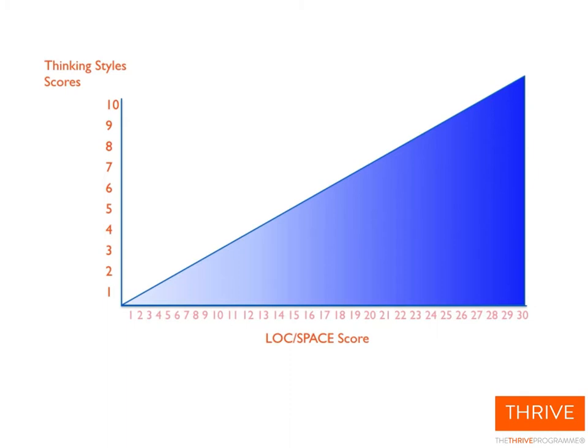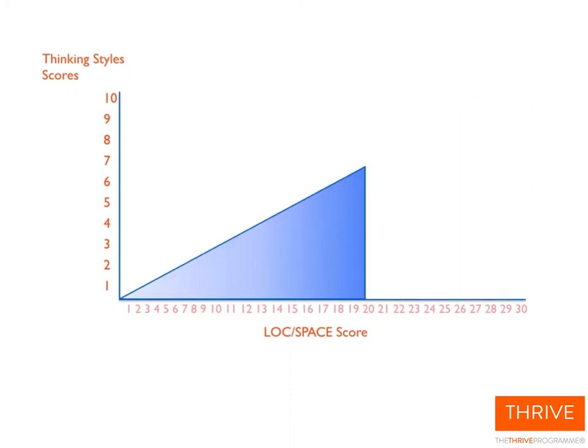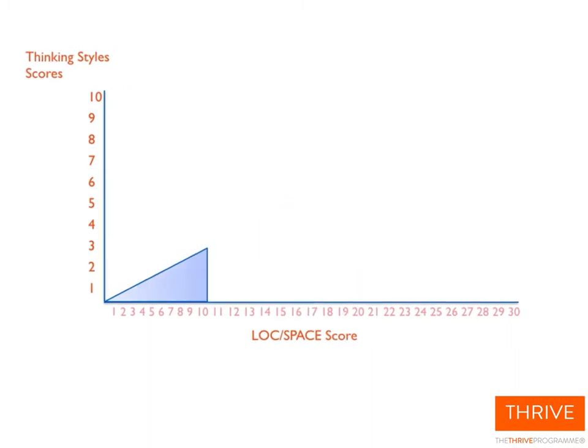As your locus of control score comes down, you have more grip over your thinking, you don't overreact, and your thinking styles are much calmer. For example, someone scoring 19 or 20 on the locus of control quiz would score about seven out of ten on average across their thinking styles. But if someone scored only 10 on the locus of control quiz, they'd likely score an average of only about three on their thinking styles — because they're not creating much anxiety, not worrying, brooding, or catastrophizing. They feel powerful in most key areas of their life.